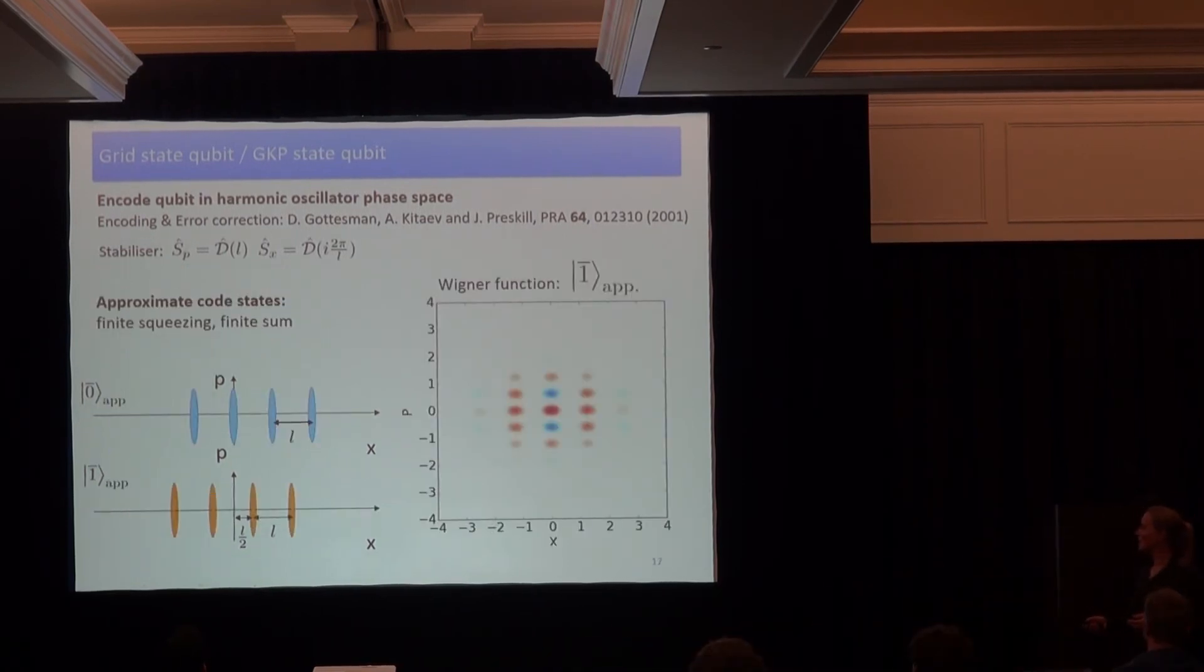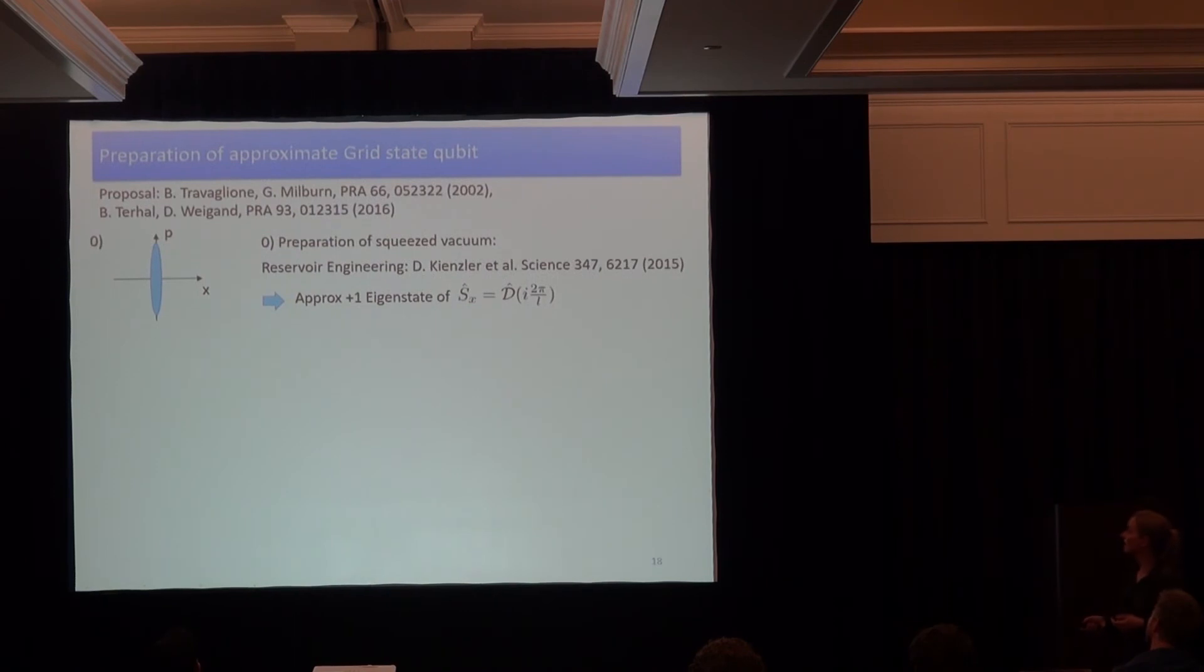So again, this is not a state I'm going to prepare in my PhD, but fortunately people have looked into approximate versions of these, and this is simply taking finite squeezing and a finite sum, and one can think about how the finite sum should drop off to get the best approximations and so on. And here, again, as a reminder, this is just the four-component approximate version of a grid state with a Gaussian envelope.